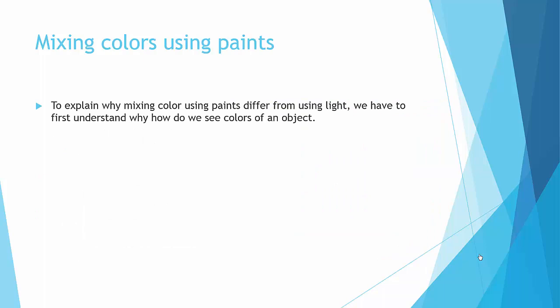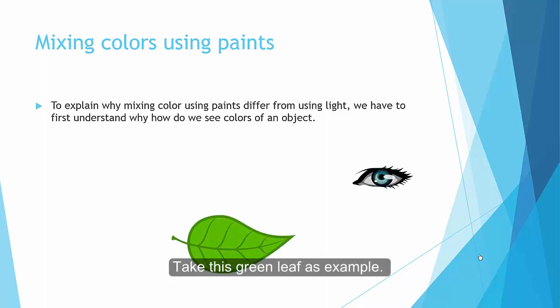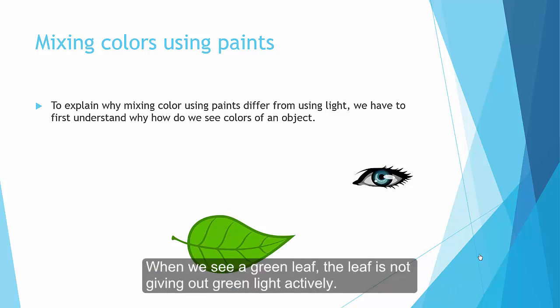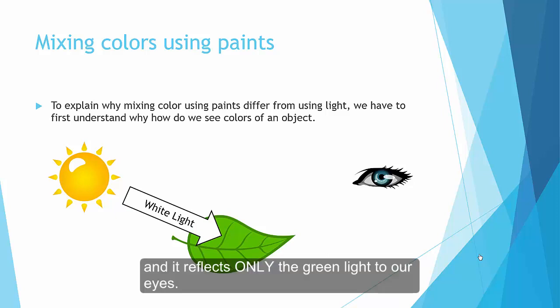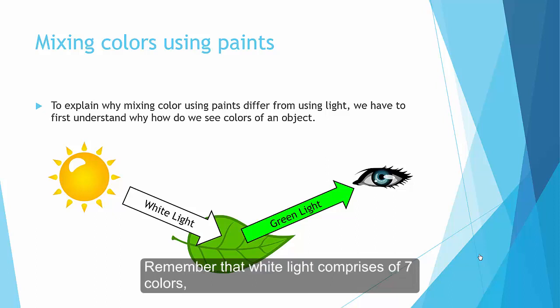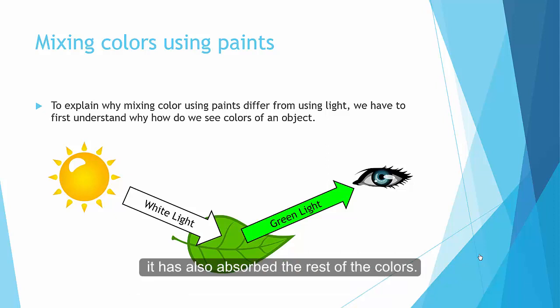To explain why mixing colors using paint differs from using light, we have to first understand why do we see colors of an object. Take this green leaf for example. Why do we see it as green? When we see a green leaf, the leaf is actually not giving out green light actively. Instead, it is actually taking the surrounding light source, for example the sun, and it reflects only the green light to our eyes. Remember that white light actually comprises of seven colors. It means that when the leaf reflects only green light, it has also absorbed the rest of colors.